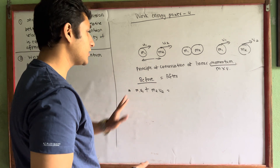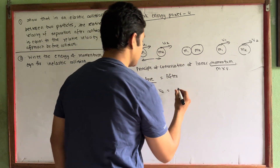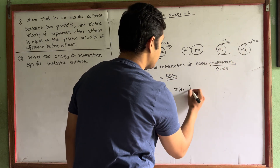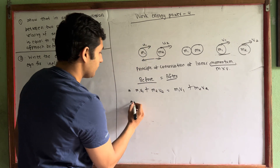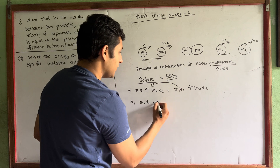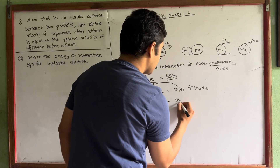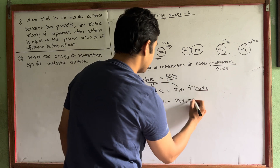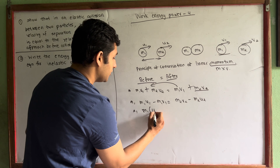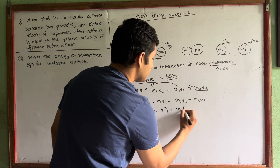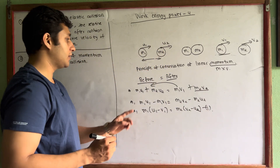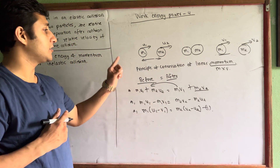So the conservation of momentum gives us: M1·U1 + M2·U2 = M1·V1 + M2·V2. Rearranging, M1·U1 minus M1·V1 equals M2·V2 minus M2·U2. Taking M1 as common: M1(u1 minus v1) equals M2(v2 minus u2). This is the equation from the principle of conservation of linear momentum.